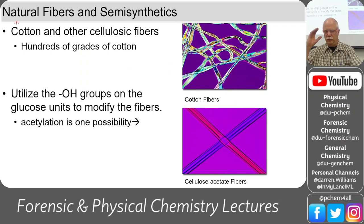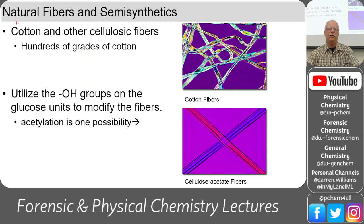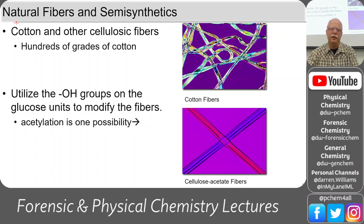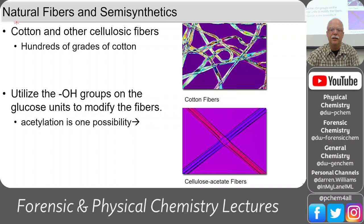We talked last time about the difference between natural fibers and semi-synthetics. These two are both chemically the same as cotton—they're both carbohydrates, both cellulosic materials—but the bottom one has been processed: it's cellulose acetate fiber.